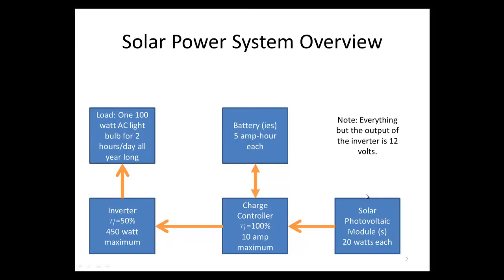This is our general view of our solar power system. We have a couple different things that we need to define here — how everything is connected. First, let's start with the load. The load is something like a light bulb or a fridge, or anything that uses electricity — anything you plug in your house. In this example, it's going to be plugged into the solar power system. We're going to be using a 100-watt AC light bulb, and we're going to be using it for two hours a day all year long.